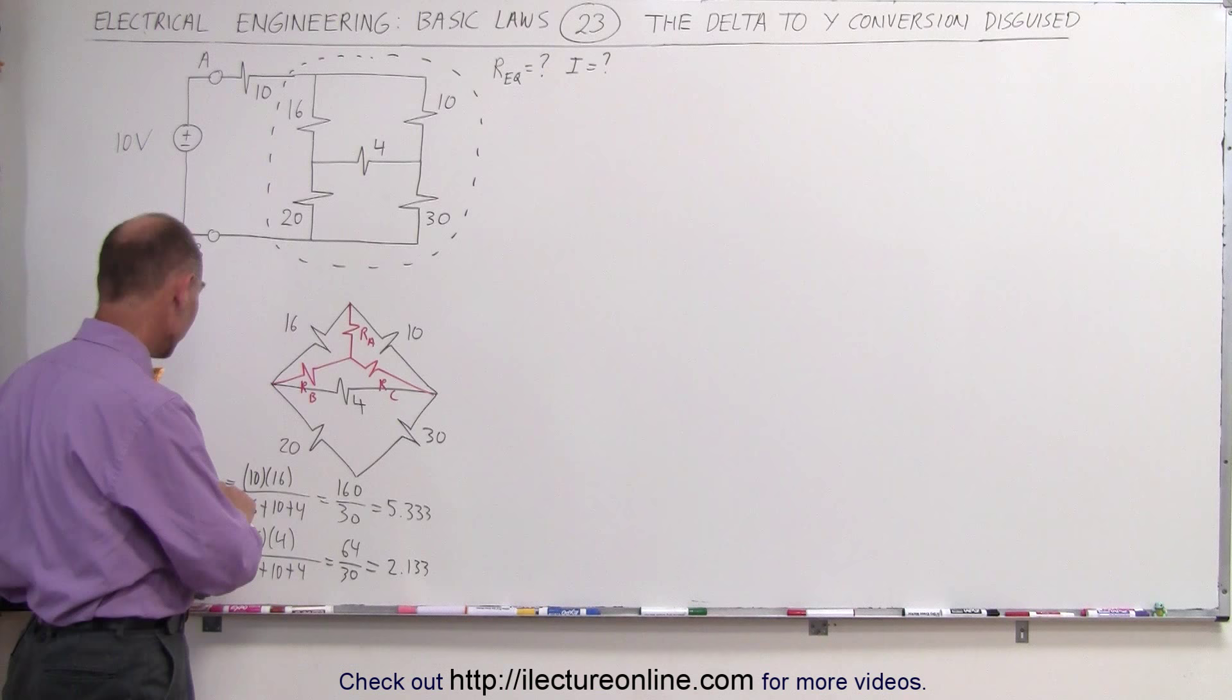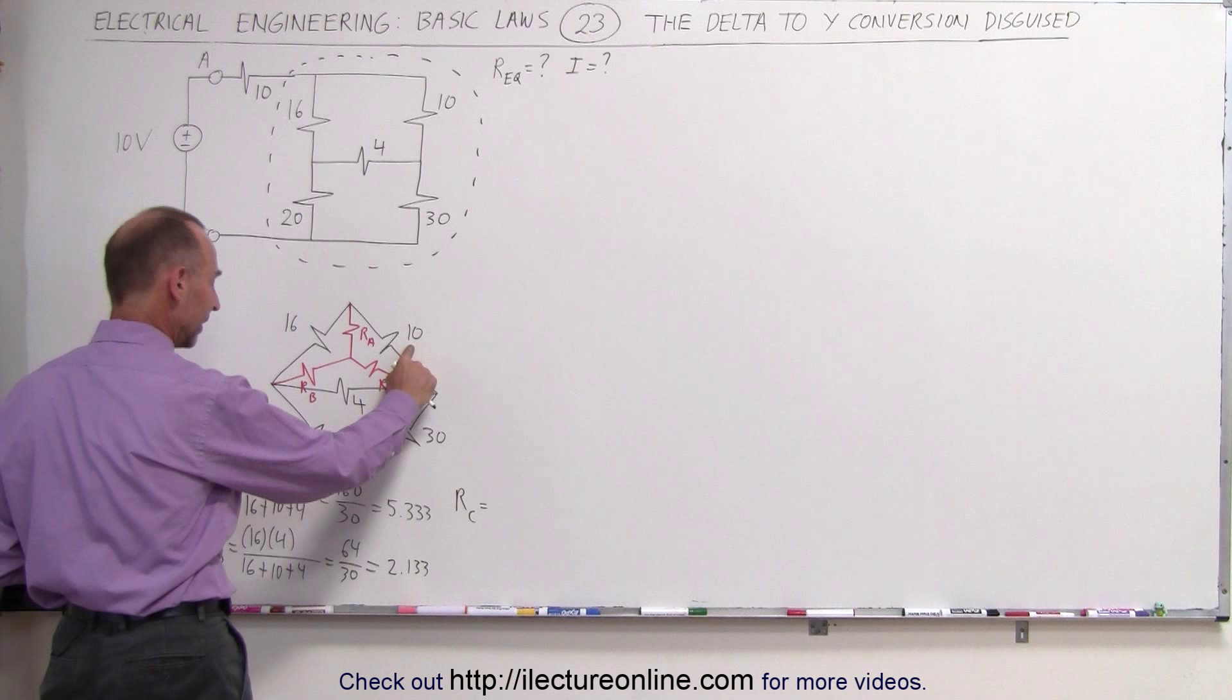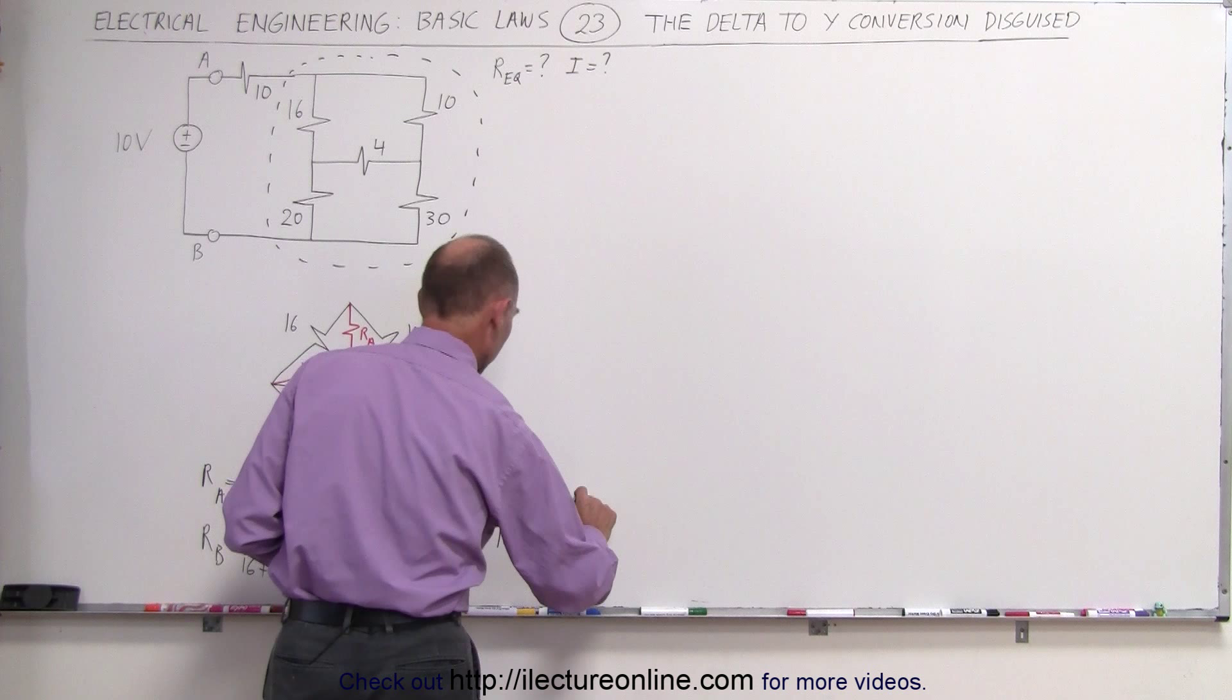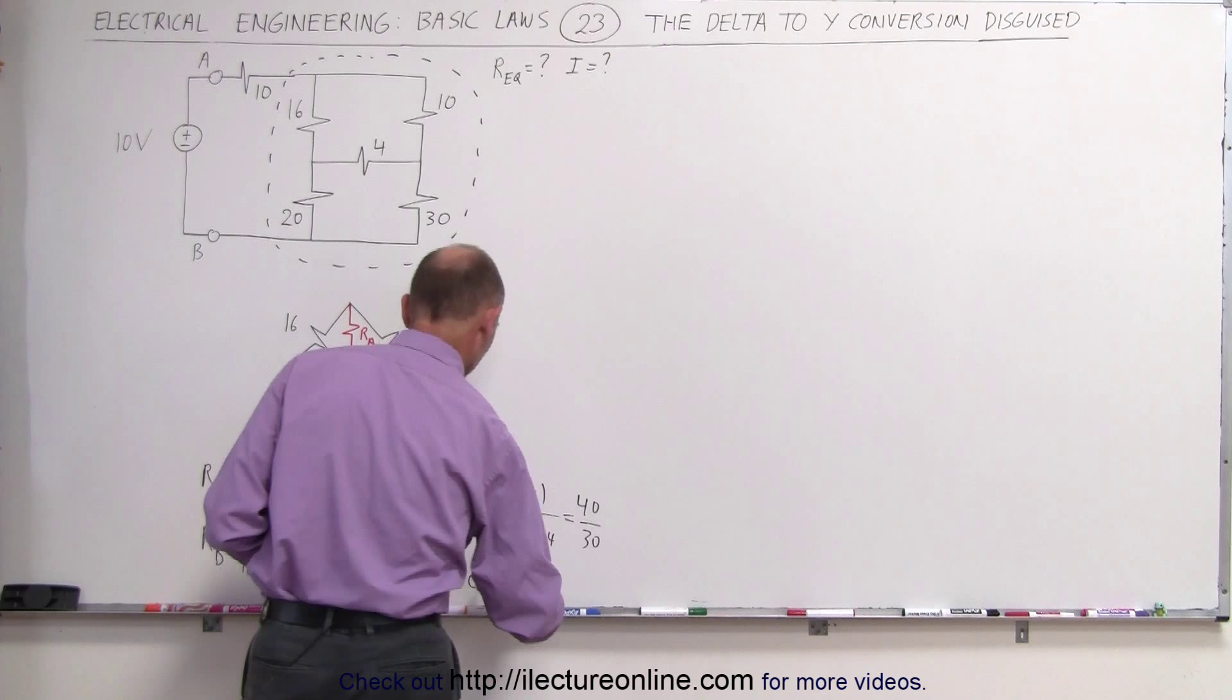Next we need to find R sub C. R sub C is equal to, notice R sub C is between the 10 and the 4-ohm resistor. So it's 10 times 4 divided by 16 plus 10 plus 4, which is equal to 40 divided by 30, which is equal to 1.333.